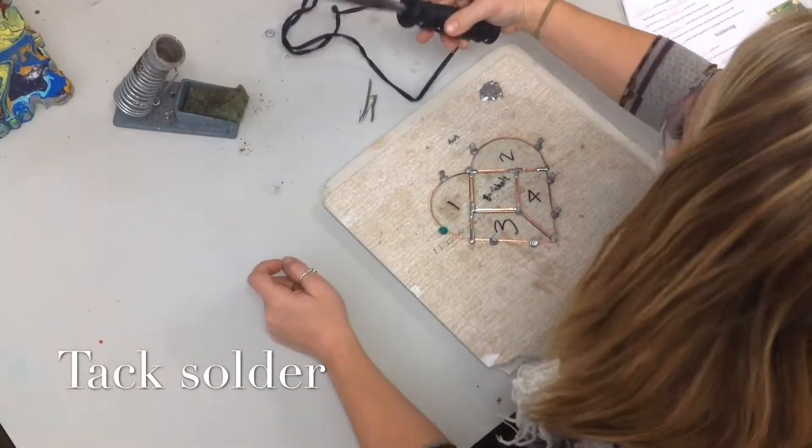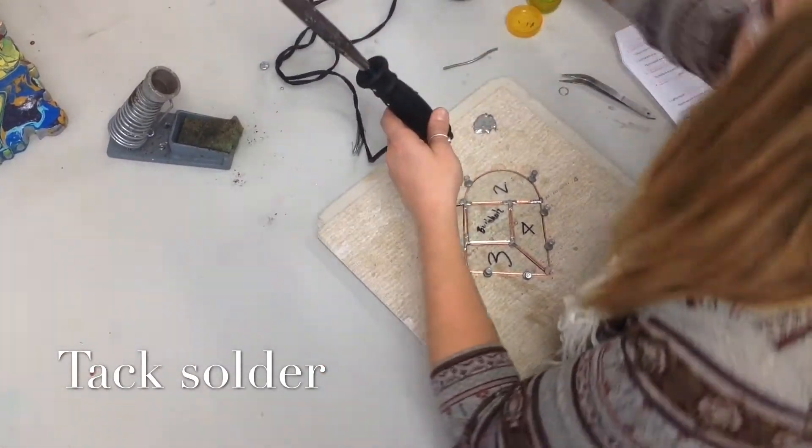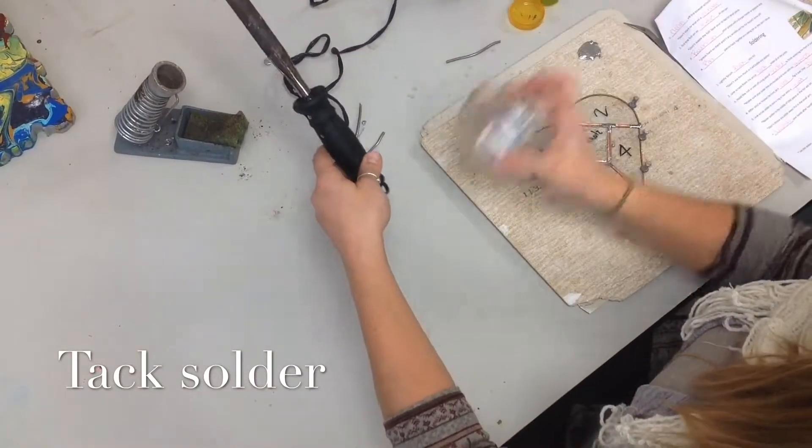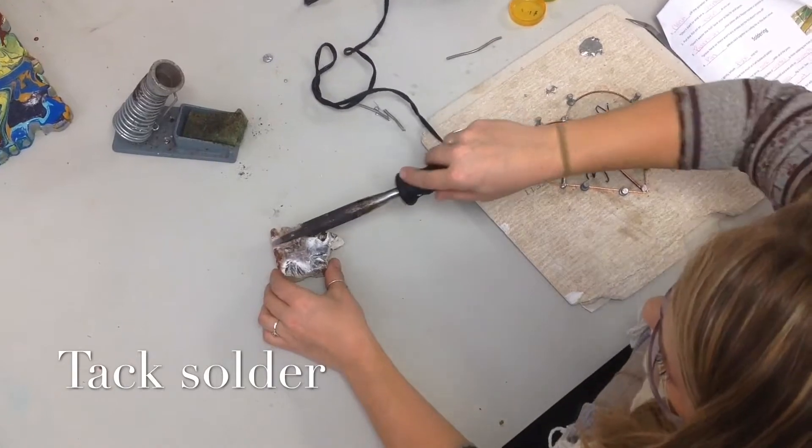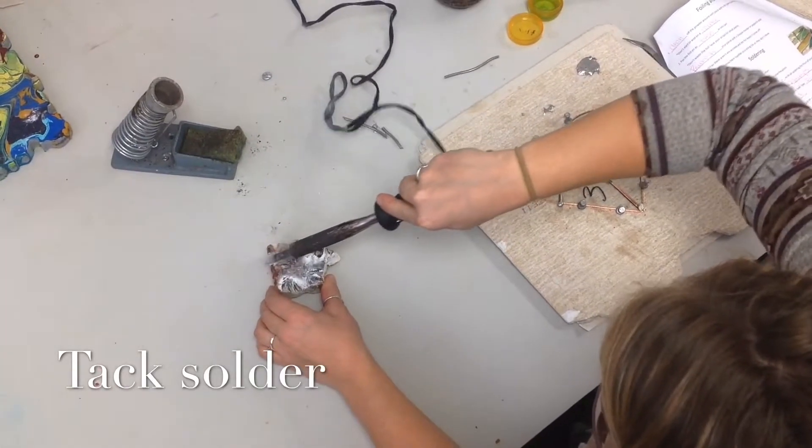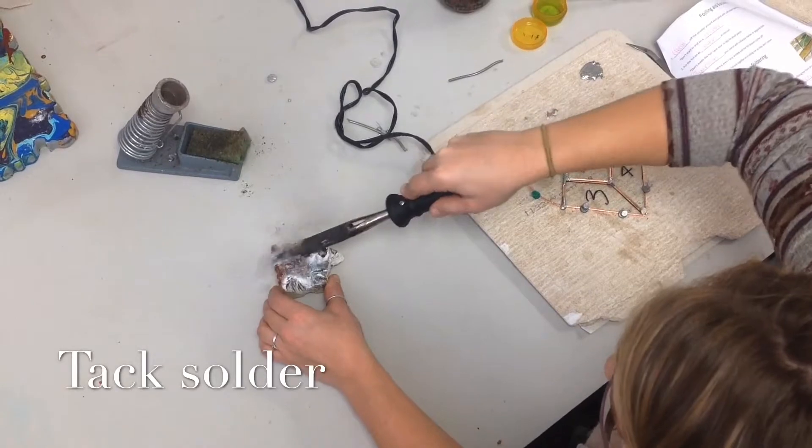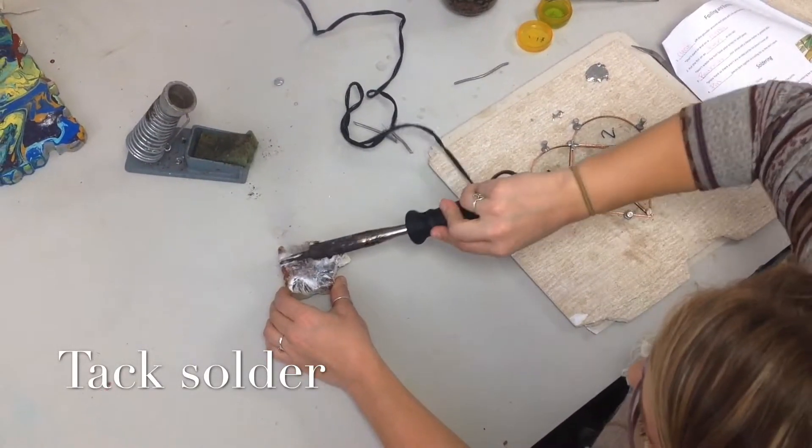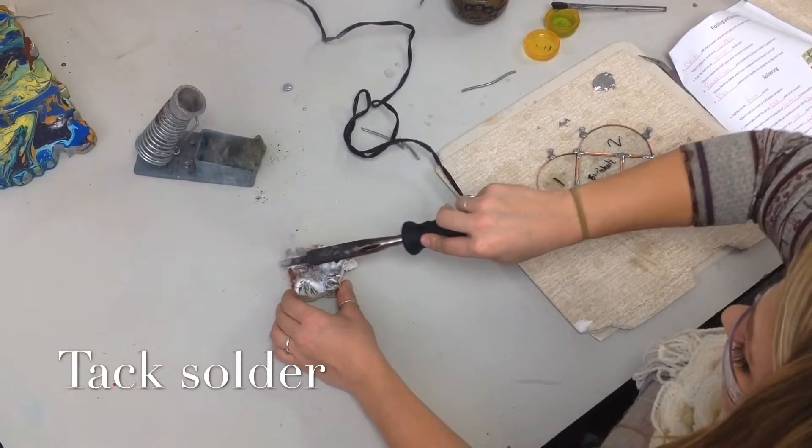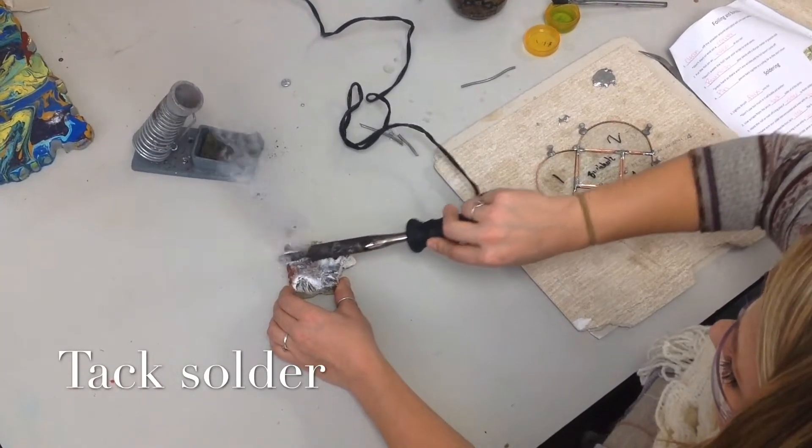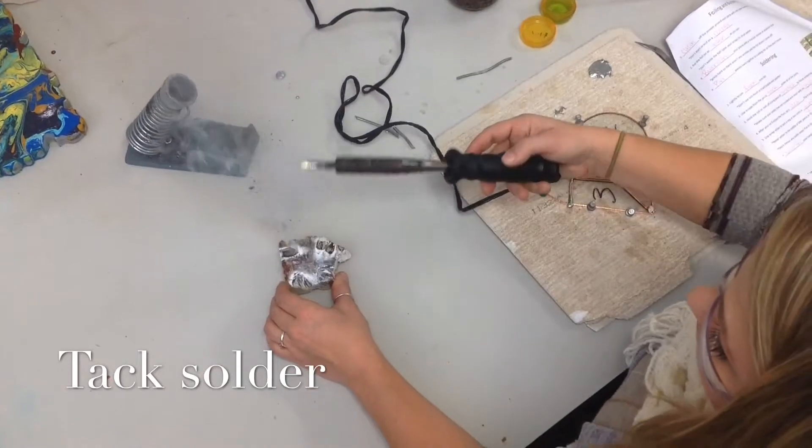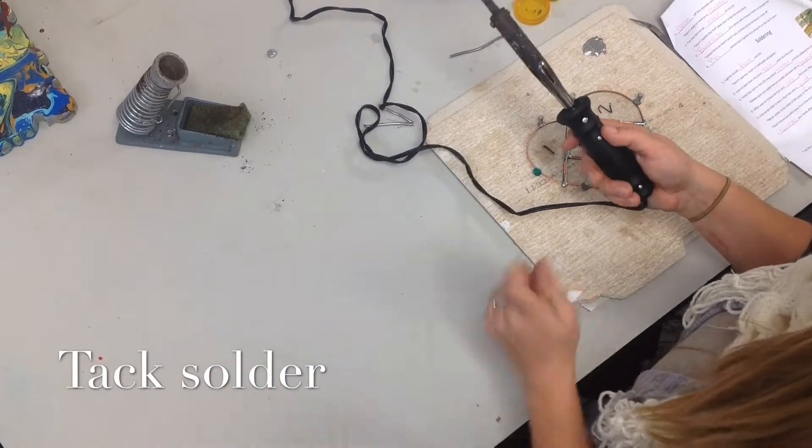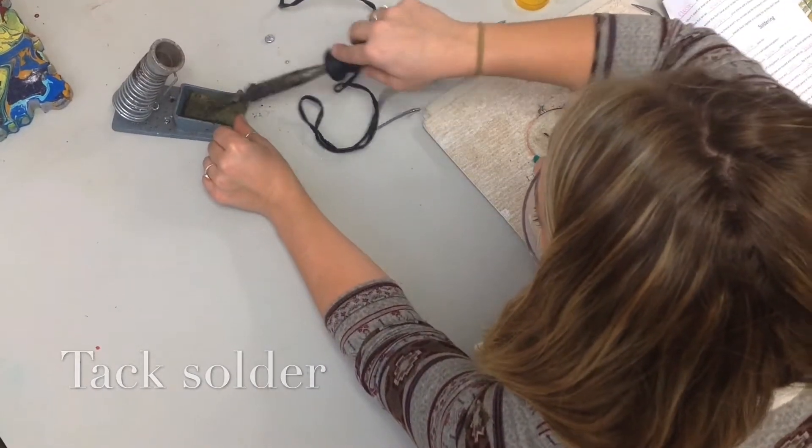If it doesn't get shiny from wiping it on the sponge, you need to use this block. This is some sort of mineral that will clean the solder off. It gets really smoky, but you have to press down really hard. It will clean the tip of your iron so it gets shiny. If you're using this a lot and it's getting smoky in here, make sure you open that door because you definitely don't want to be breathing this stuff in.